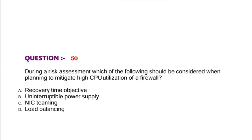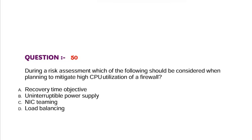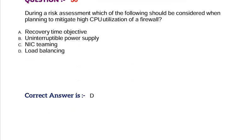Question: During a risk assessment, which of the following should be considered when planning to mitigate high CPU utilization of a firewall? Option A, recovery time objective. Option B, uninterruptible power supply. Option C, NIC teaming. Option D, load balancing. Correct answer is Option D.